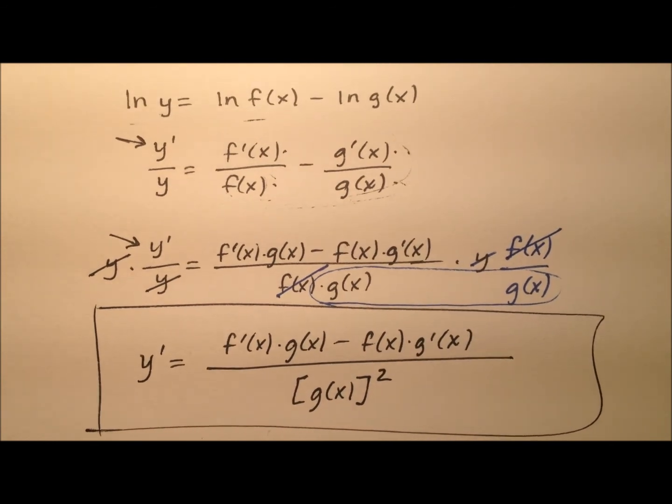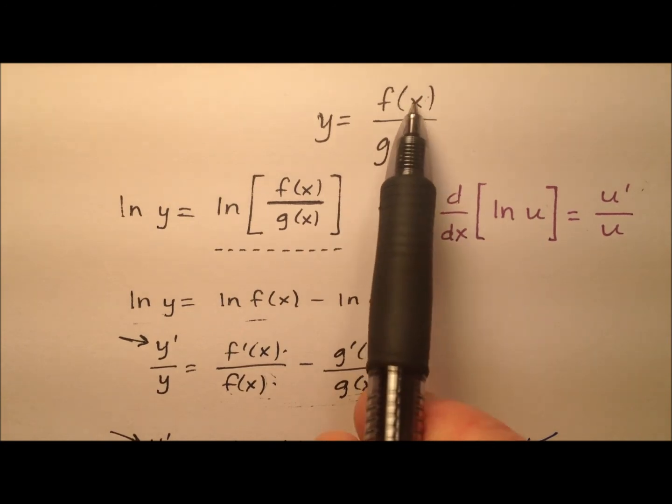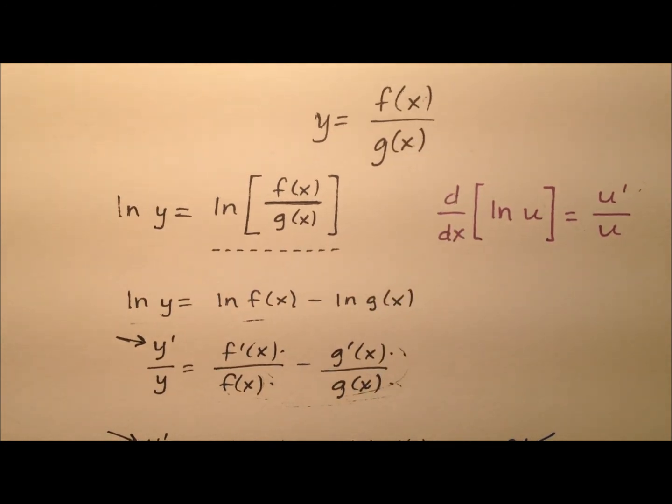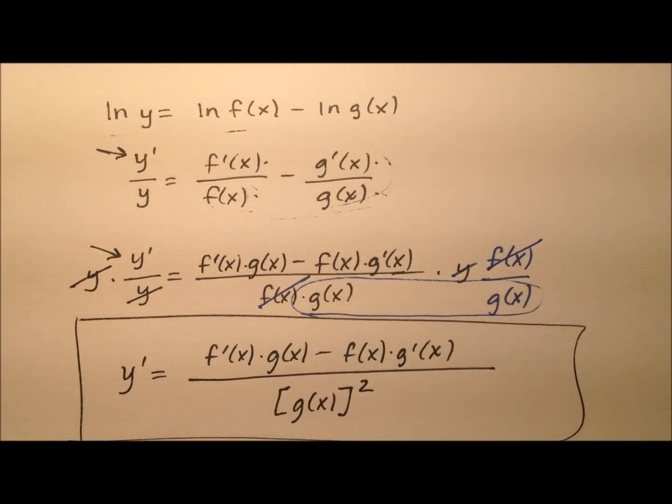and it looks like here we have this g of x that's being squared. So right here is going to be our quotient rule to find the derivative of a function that is comprised of, of course, the quotient of two other functions. And remember, if you have this rule memorized already, or maybe you've already been exposed to it,